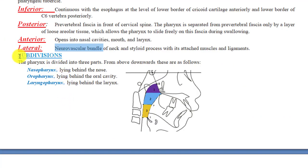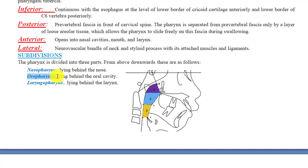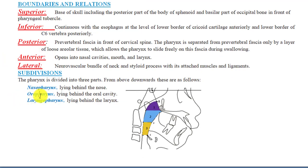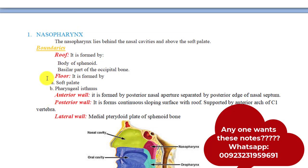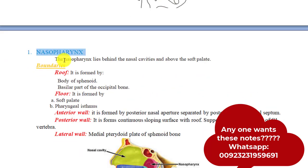The pharynx is divided into three important subdivisions. The nasopharynx is the part of the pharynx that lies posterior to the nasal cavity. The oropharynx is the part that lies behind the oral cavity. The laryngopharynx is the part that lies behind the larynx. We will now discuss each subdivision in detail, beginning with the nasopharynx.